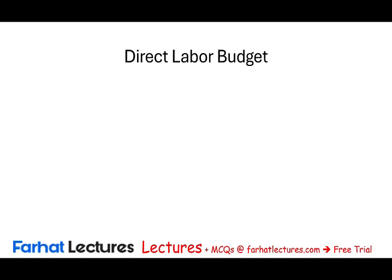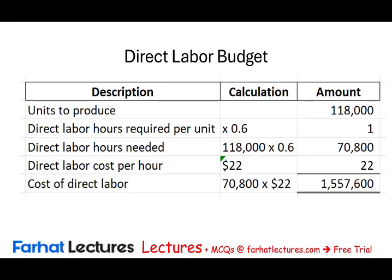For the direct labor budget, each unit requires 0.6 of an hour of labor. So 118,000 units times 0.6 hours gives us 70,800 hours needed. We pay $22 per hour, so 70,800 hours times $22 gives us $1,557,600 in direct labor cost. The company will need to plan for that amount in the production budget.